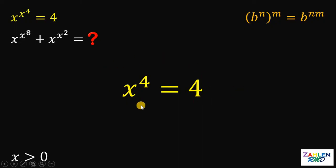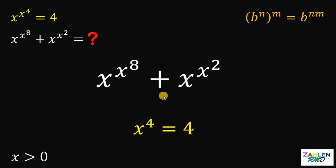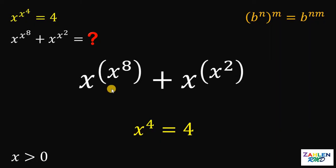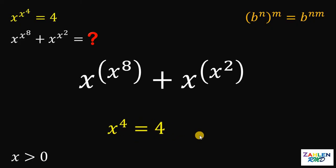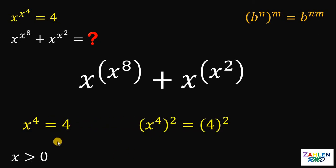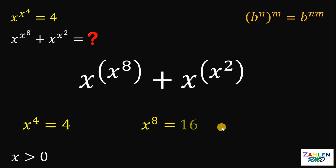Let's set aside this result and get the expression we want to evaluate. Note that x raised to x raised to 8 and x raised to x raised to 2 can be written as x raised to the power of x raised to 8 plus x raised to the power of x squared. We now have a value for x raised to the fourth power, which equals 4. If we raise both sides of that equation by 2, the left-hand side is x raised to the 8th power and 4 squared is 16. Thus, x raised to the 8th power is just 16.